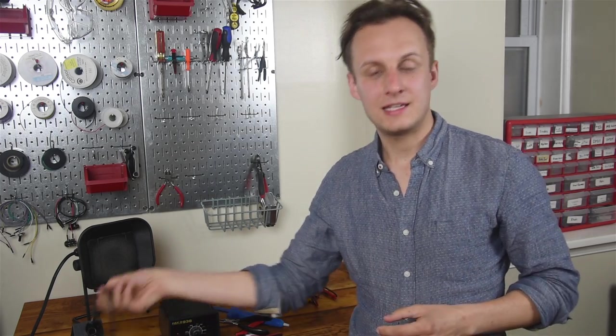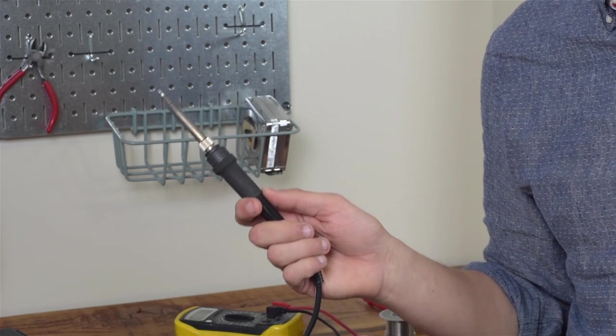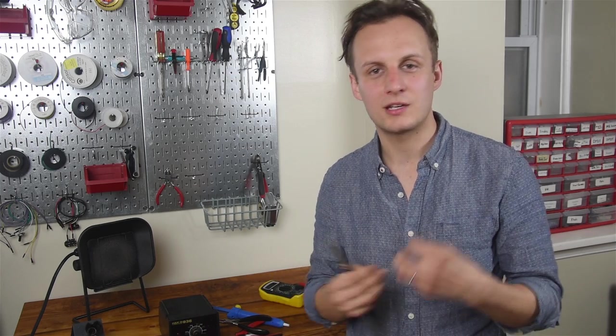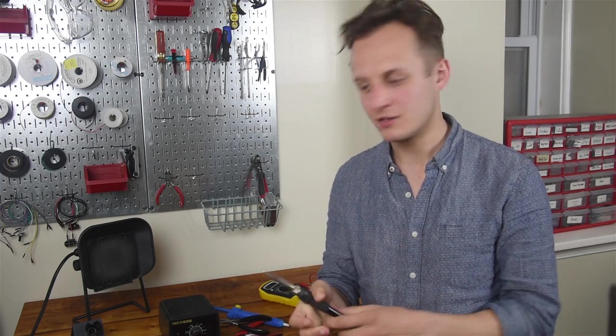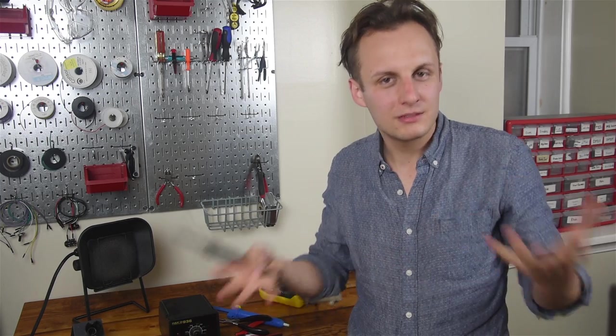Okay, the first tool is a soldering iron. Soldering is the main activity of building your own gear. It's how we join components and circuit boards together. This gets hot and it melts metal, basically.